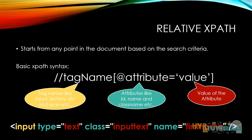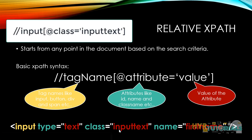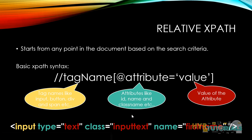The basic structure of relative XPath looks like this: double slash, then the tag name — which can be anything like input, anchor tag, div, table, or anything — then @attribute equal to the attribute value. For example, if this is a simple HTML input element, you write double slash input, and all these things are called attributes while the values in red are called attribute values. So @class equals 'input-text' — that is how we write relative XPath.